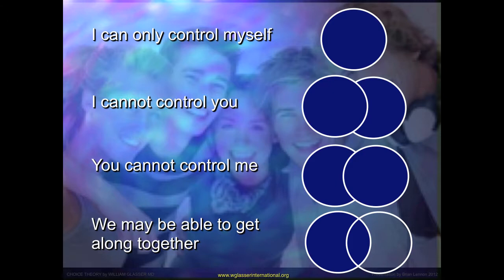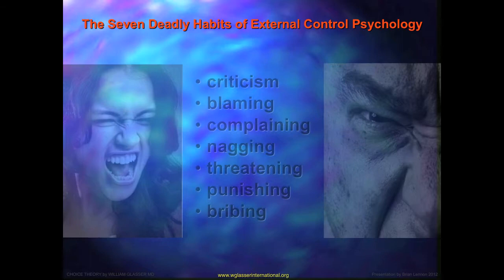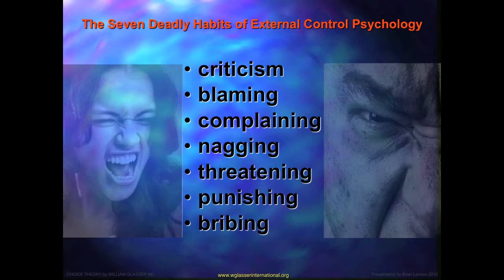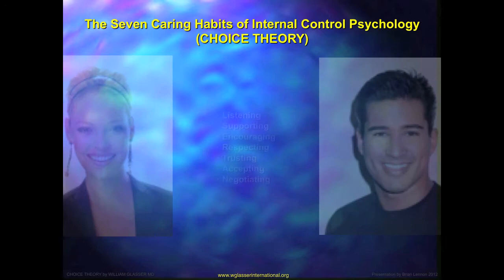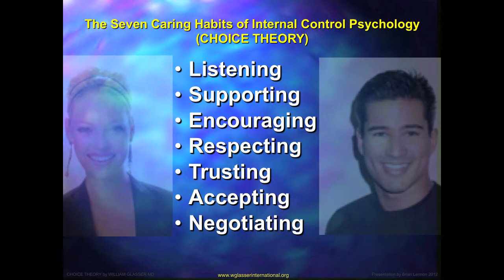These are very central ideas: I can only control myself; I cannot control you. Glasser identifies the seven deadly habits of external control psychology: criticism, blaming, complaining, nagging, threatening, punishing, and bribing. These are signs that we are trying to control another person, or that we believe our own lives are controlled. Glasser believes that if we can eradicate these from our lives, even for a few days, it will make a massive difference. He suggests seven caring habits to use instead: listening, supporting, encouraging, respecting, trusting, accepting, and negotiating — and these are at the heart of personal wellbeing.